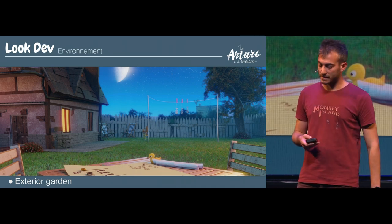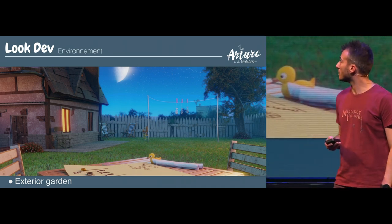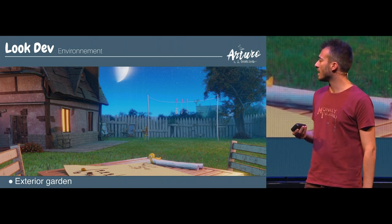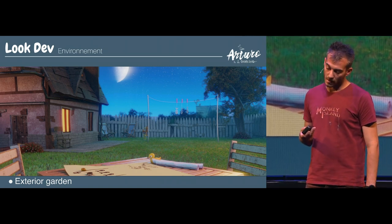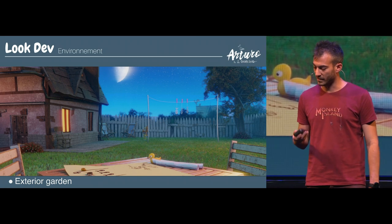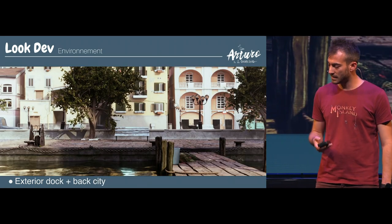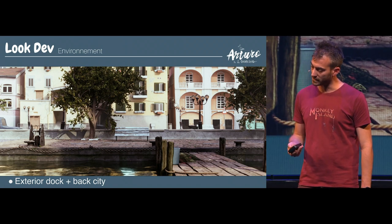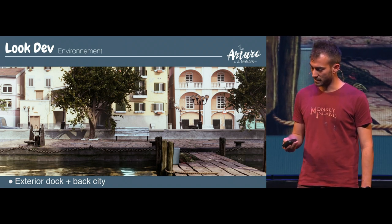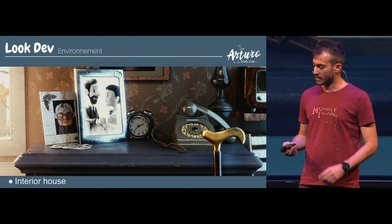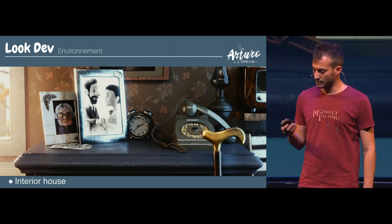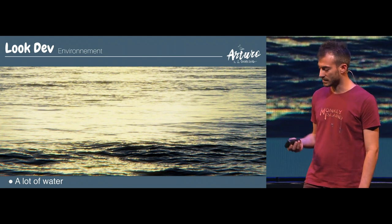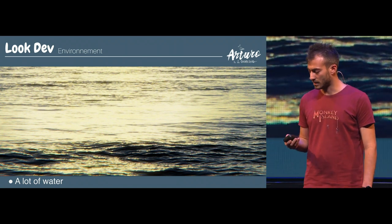For the environment, in this movie we have four environments: the exterior dock, with a lot of buildings and props. The interior house, the exterior street, and a lot of water in this movie — a lot of water.